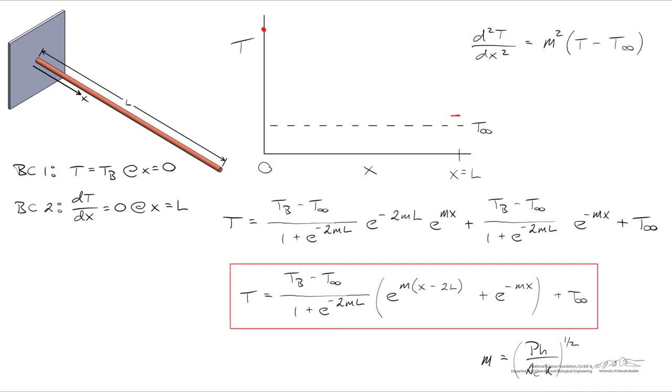So this left hand side of the governing differential equation gives us the concavity. And if the temperature of the rod is hotter than the temperature of the ambient temperature, m squared is some positive quantity, that says that the concavity of our curve is going to be upward.